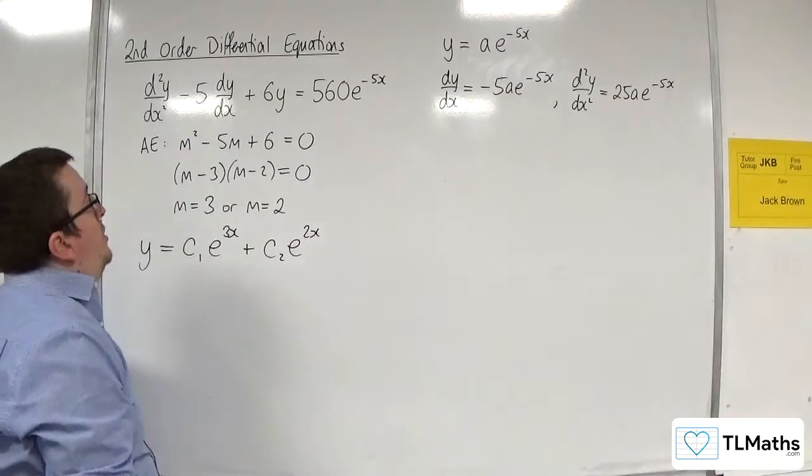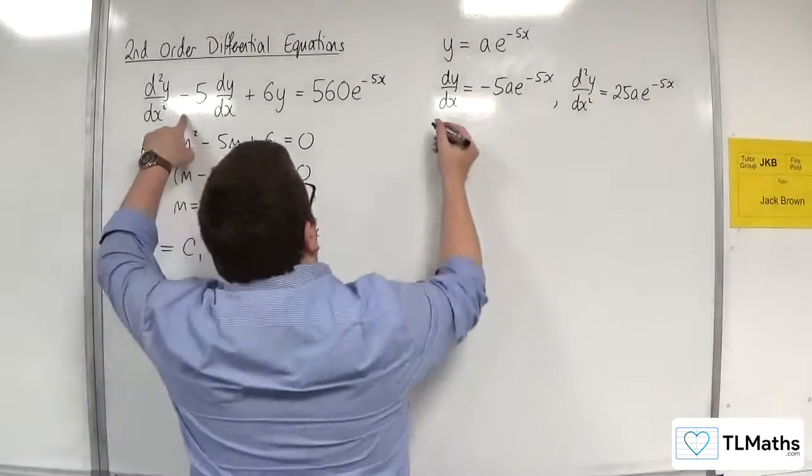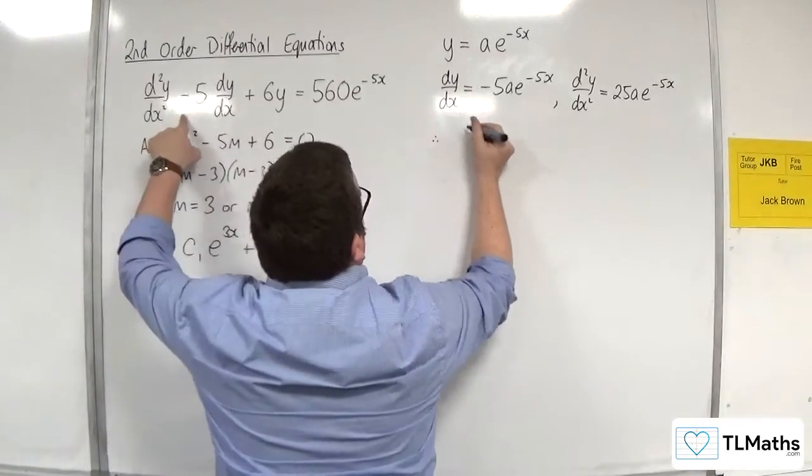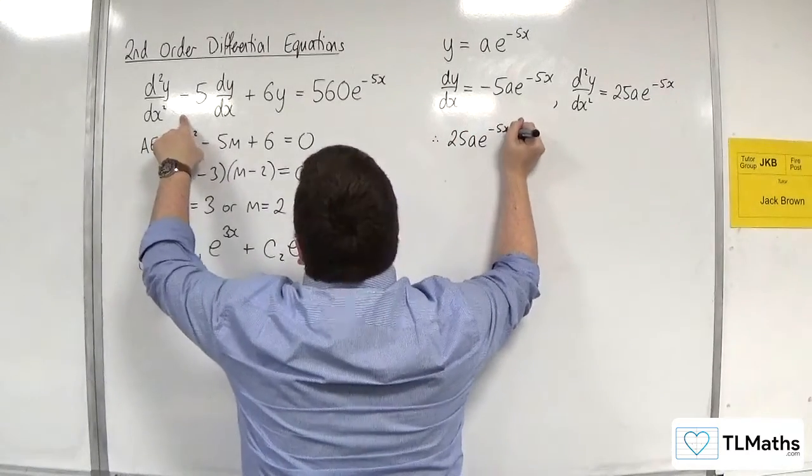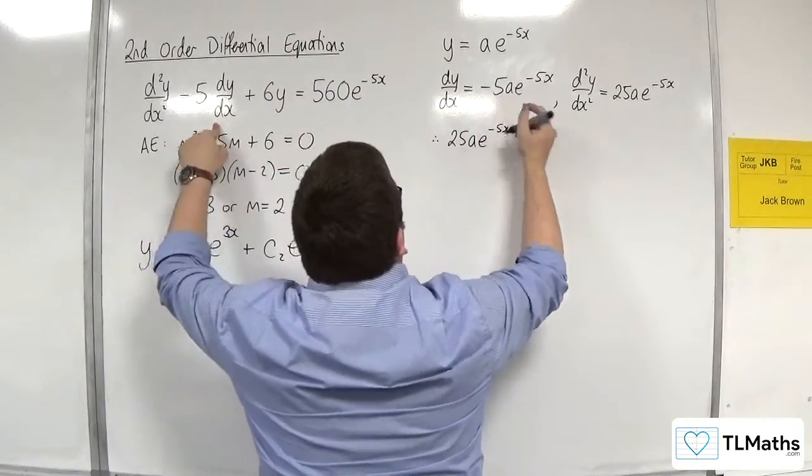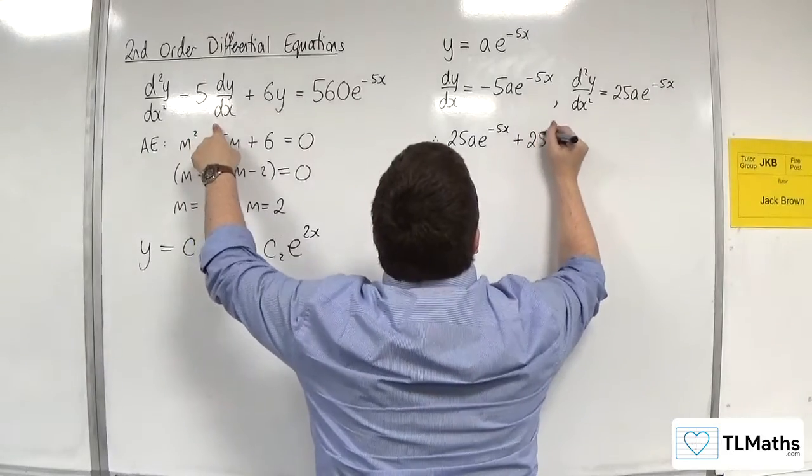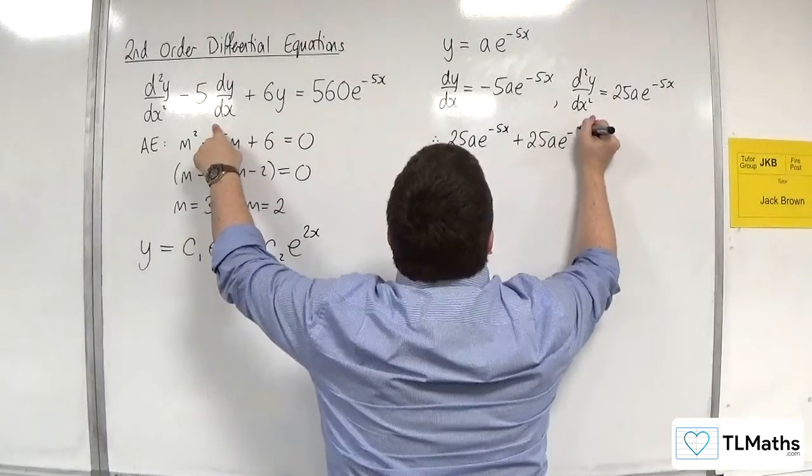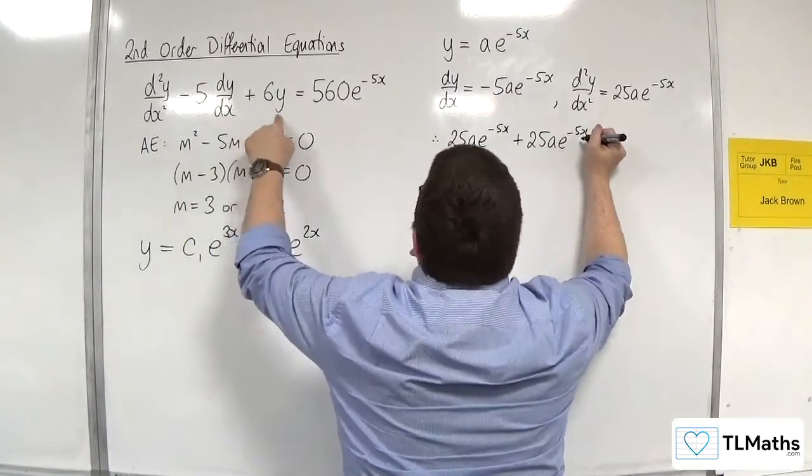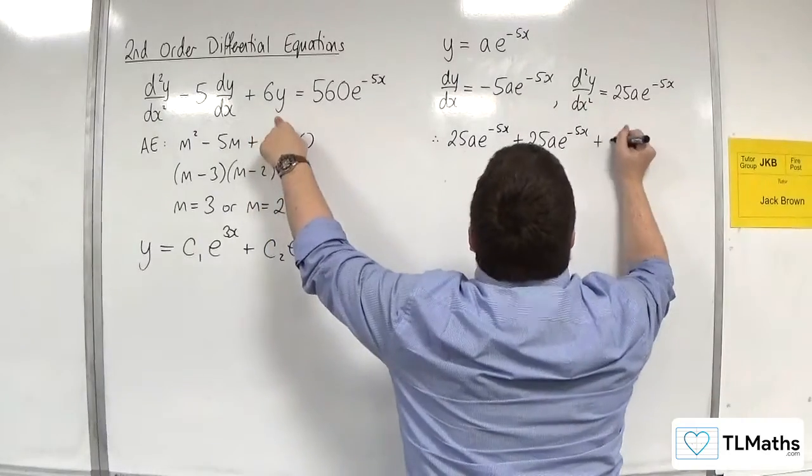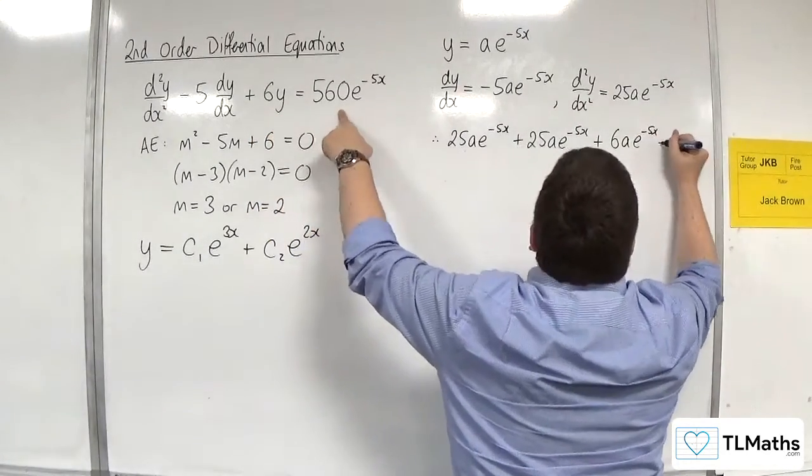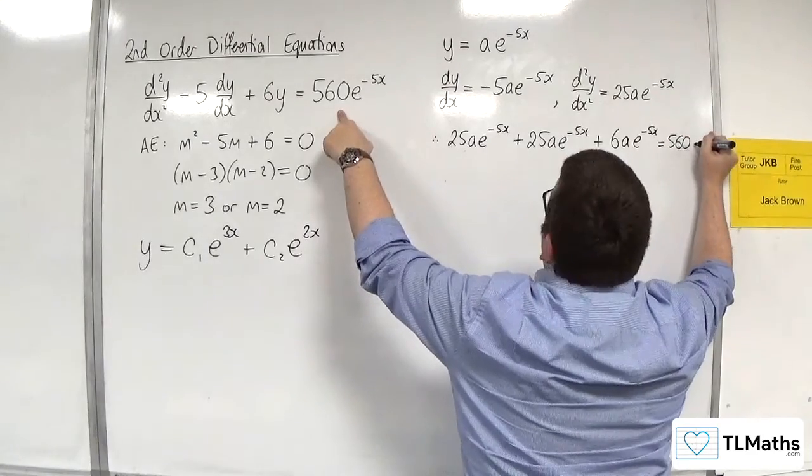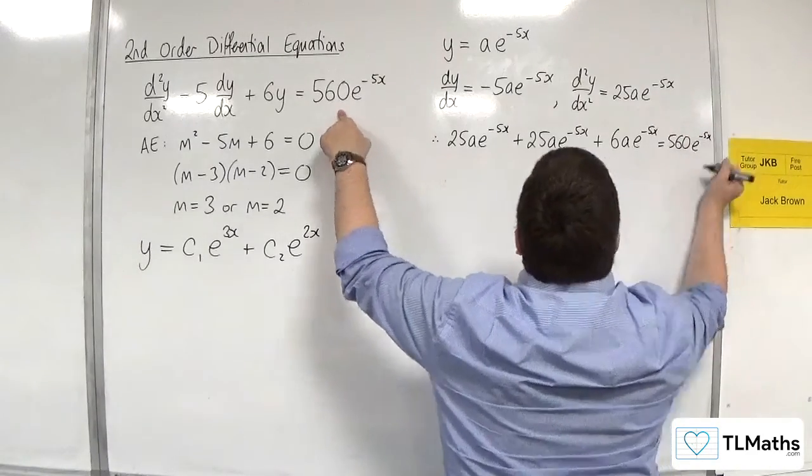So we substitute this into my differential equation. So we have the 25a e to the minus 5x, take away 5 lots of this one, so plus 25a e to the minus 5x. Then I've got 6 lots of this one, so plus 6 lots of a e to the minus 5x. And that's got to be equal to 560 e to the minus 5x.